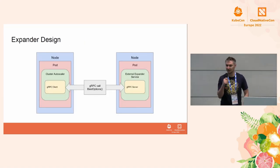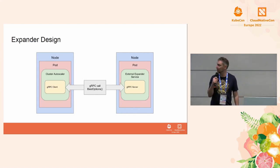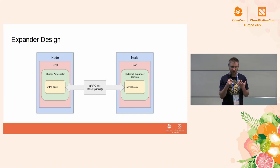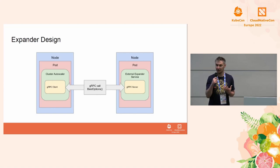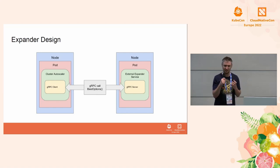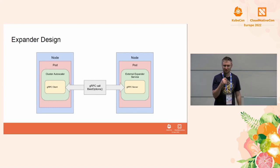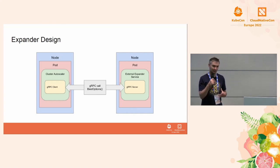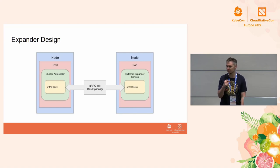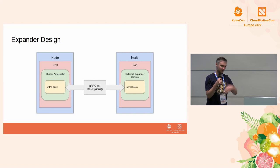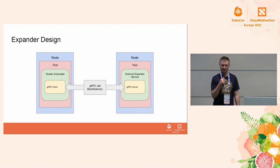Here's the architecture: on the left you've got a node in your cluster with cluster autoscaler running. Inside cluster autoscaler there's a gRPC client that conforms to the expander interface — it has that best options call. What best options does is translate the expander parameters into a protobuf and pass that over the network to another service in your cluster acting as a gRPC server. That service takes all the options, runs whatever business logic you want, and returns the choice back to cluster autoscaler, where the gRPC client translates it back into cluster autoscaler lingo.